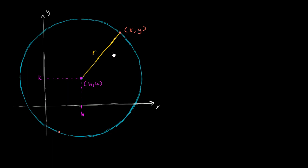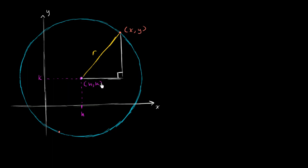Well, we can actually use the Pythagorean theorem. Let's draw one segment from the center that is parallel to the x-axis, and another segment starting at x, y that is parallel to the y-axis — completely vertical. So this one is completely vertical, this one is completely horizontal, giving us a right angle right over here. r is the hypotenuse of this right triangle.